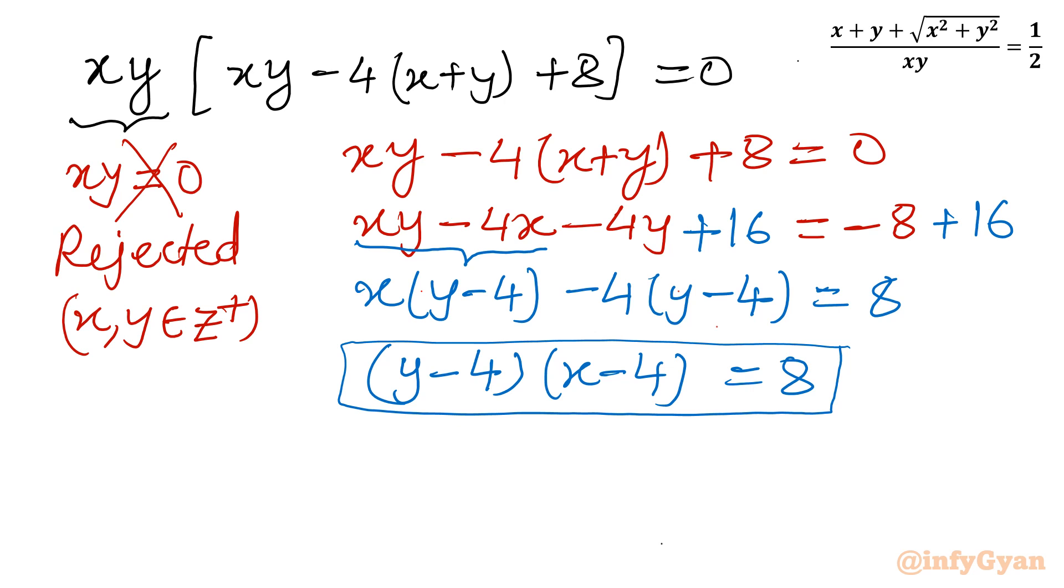Now the turn of prime factorization or factorization of RHS 8. So we can consider 1 times 8, 8 times 1, 2 times 4, 4 times 2. And same set with the negative magnitude. Minus 1, minus 8. Minus 8, minus 1. Because these values are basically the values of y minus 4 and x minus 4. We do not know whether x and y both are positive or not. So we have to consider the complete set.